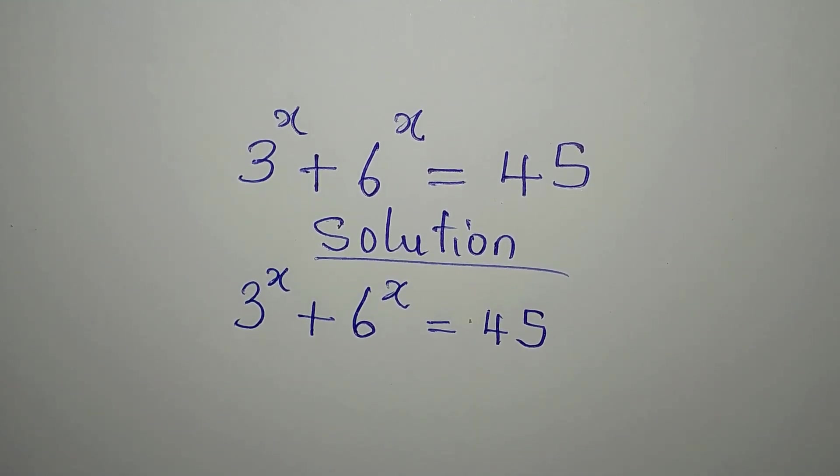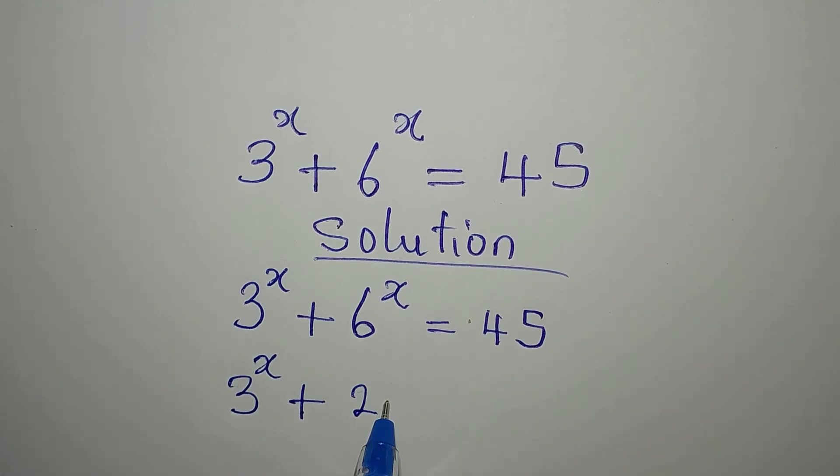Here is what I want to do first. I can have 3 to the power of x plus, this is 6, 6 is 2 multiplied by 3. So this is to the power of x and this is equal to 45.